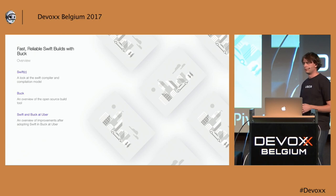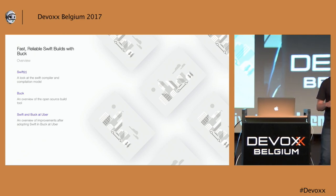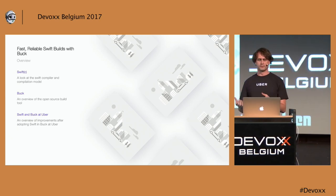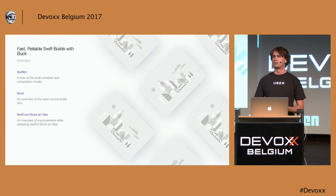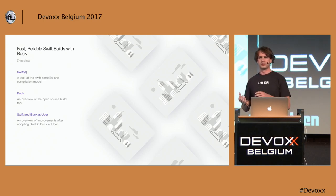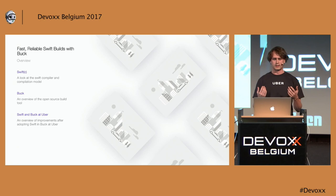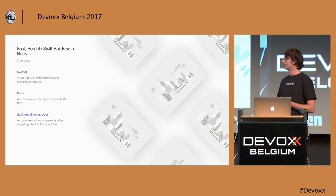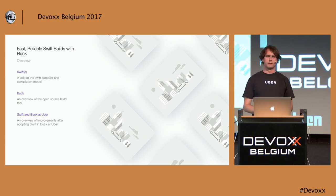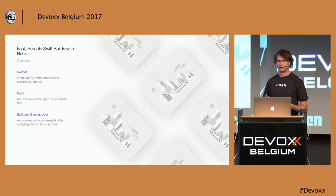Let's look at an overview of what we're going to talk about in this talk. First, I'll give you an overview of SwiftC, the Swift compiler — what makes it different from other tools, how the compilation model slightly differs, but also how it's interestingly a little bit closer to Java and Kotlin compared to a Clang-based language such as C and C++. Then we'll look at Buck, a build tool which is very useful when you have a lot of source code in a single repository. And finally, we'll look at how the implementation of Swift in Buck helped Uber and made us more productive.